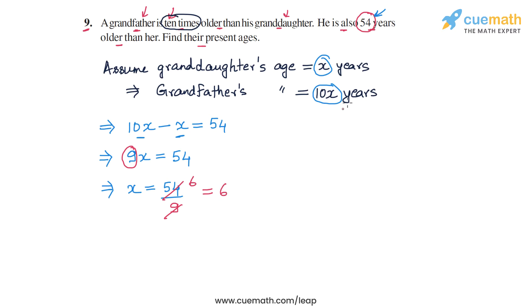And this will give us the two ages as the granddaughter's age as x years or 6 years, and the grandfather's age as 10x years or 60 years.